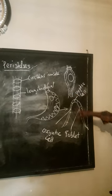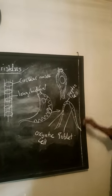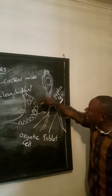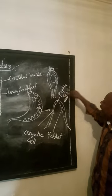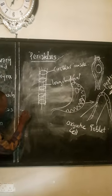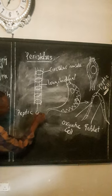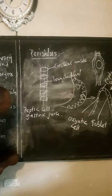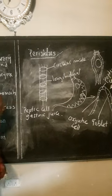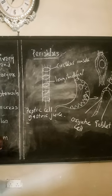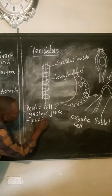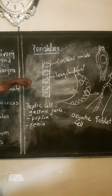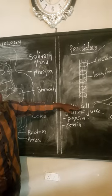To understand what happens in the stomach, we need to understand these glands. The bolus gets into the stomach, and these peptic cells are going to secrete the gastric juice. The peptic cells secrete the gastric juice. The gastric juice contains two enzymes: we have pepsin as one of the enzymes, as well as renin as the second enzyme. These two enzymes are the enzymes found in gastric juice, and the gastric juice is secreted by the peptic cells.